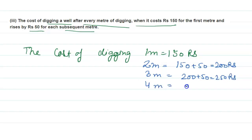For four meters it equals 250 plus 50, which is 300 rupees. Now we check if these terms are in AP or not. The series is 150, 200, 250, 300, and so on.